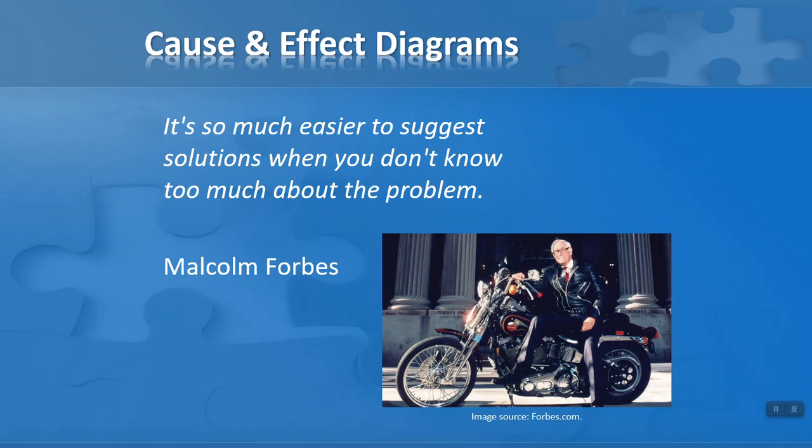Now let's start off with our quote. This is Malcolm Forbes here on his motorbike. Malcolm Forbes of Forbes magazine fame once said, 'It's so much easier to suggest solutions when you don't know too much about the problem.' In other words, he's saying we really need to find out what the problem is and dig down to find out why the problem is occurring in the first place before we go and try and fix it. It's extraordinary how often people try to fix things before they understand what's causing the problem in the first place.